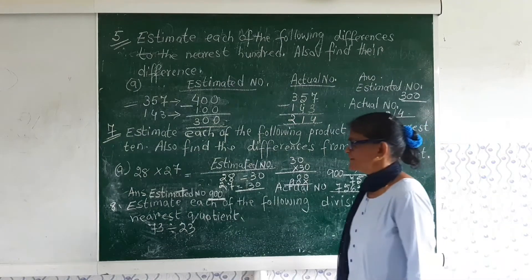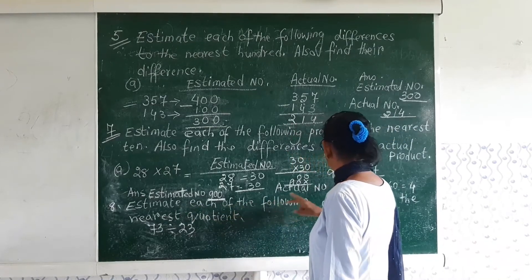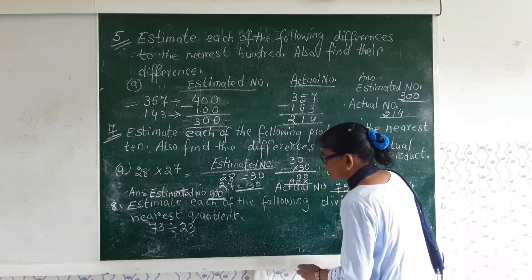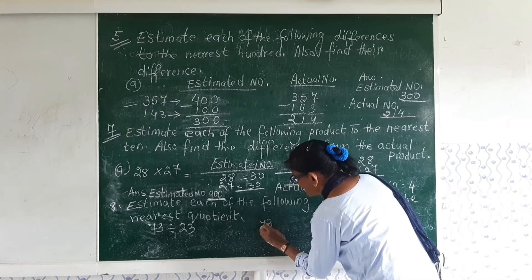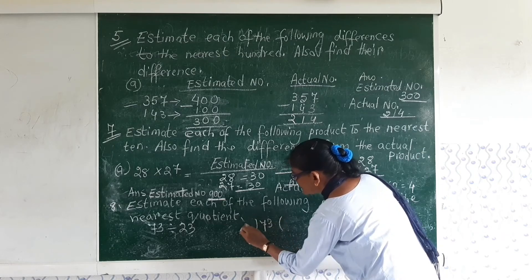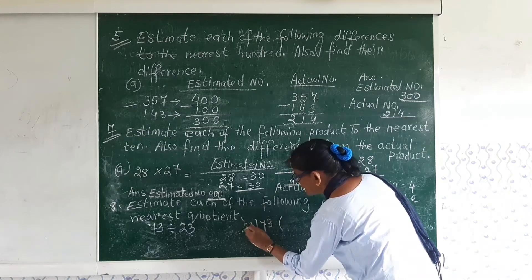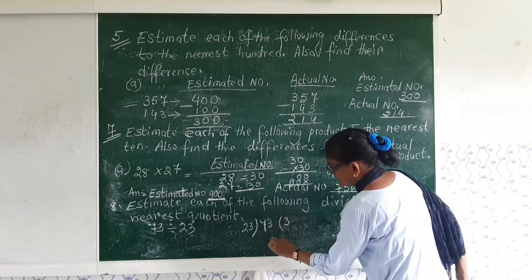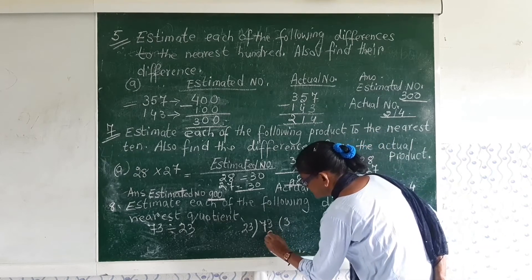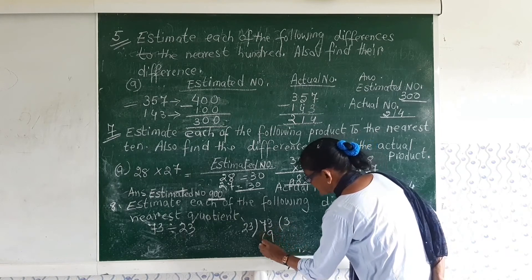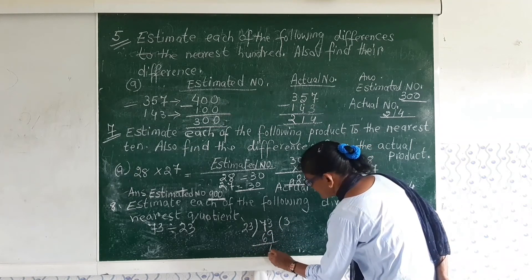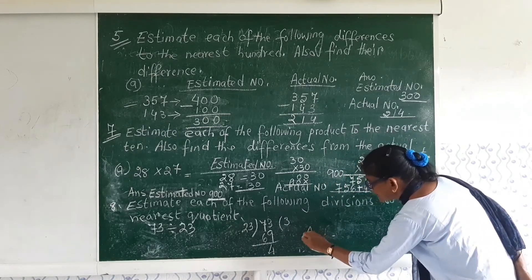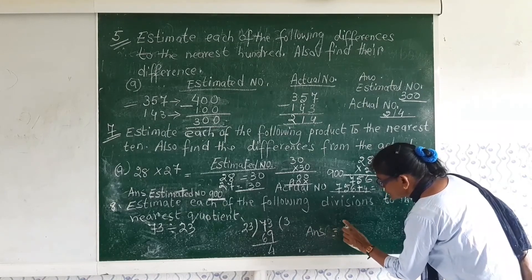Number 8. Estimate each of the following divisions. So 73 divided by 23. So what you get here? You get 3. 3 times 23 is 69. So what you get here? 4 is my remainder. 3 is my answer.